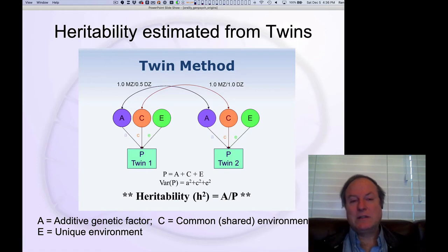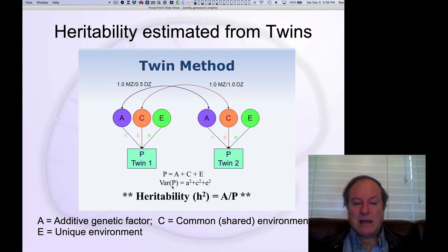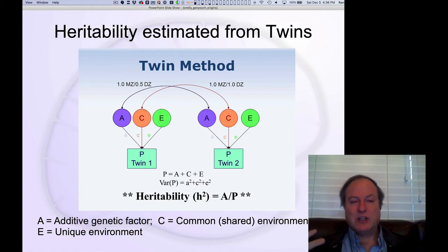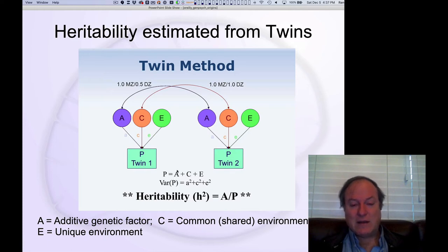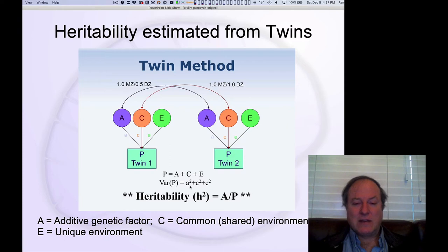You run these equations with these factors. There's a mathematical technique which allows you to estimate factors A, C, and E that best explain the overall variance in the phenotype you're measuring. The phenotype is essentially the physical expression of the genes — things like IQ, personality, height, or weight. You use this technique to estimate the heritability factor, defined as A divided by everything else — A, C, and E. So A over the sum of everything gives your estimate of heritability from the twins.